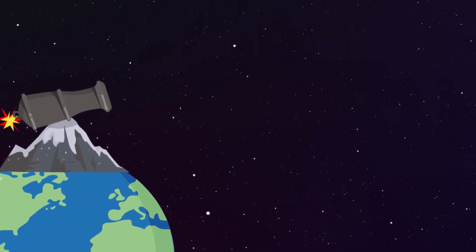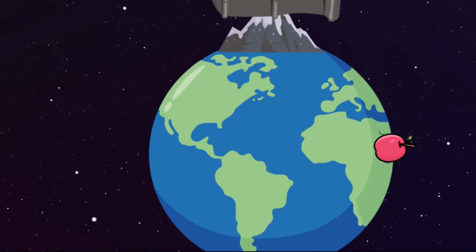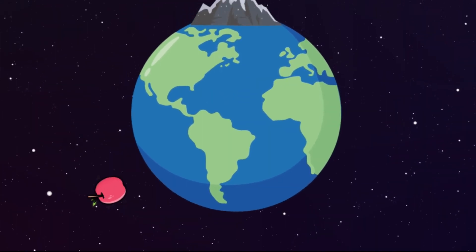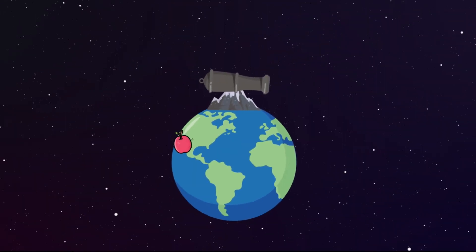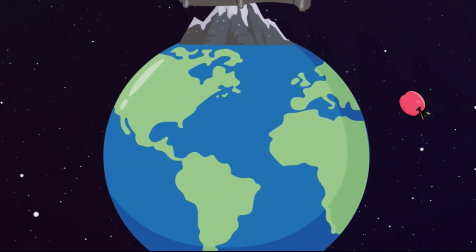However, because earth has a gravitational pull, the cannonball would follow a curved path and fall back down to the earth. If you pick the right velocity, known as orbital speed, the trajectory of the cannonball would curve at exactly the same rate the earth curves.